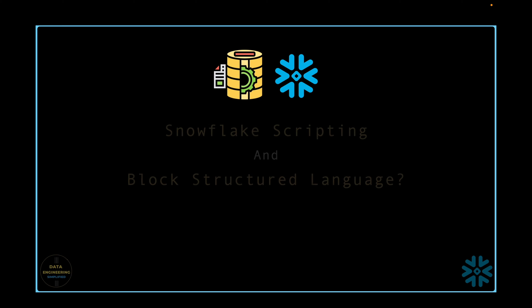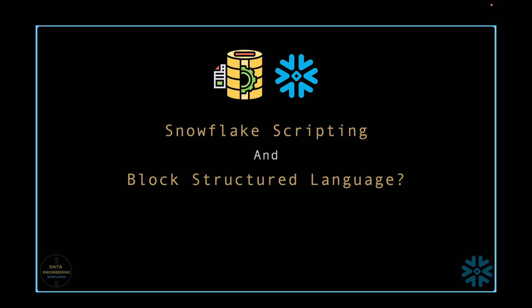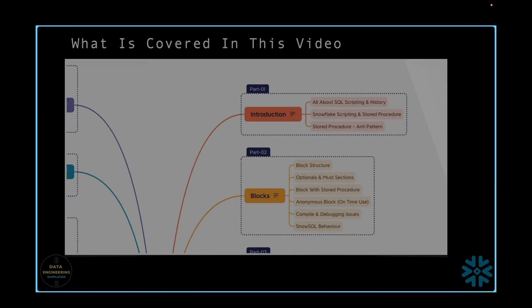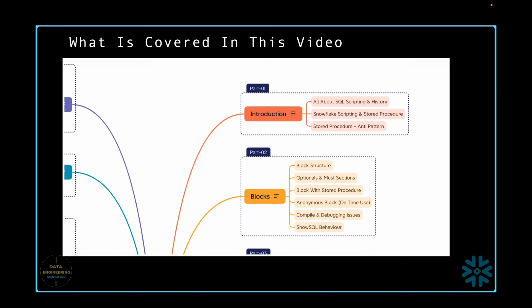In this chapter, we will explore the block structure of Snowflake scripting, which is used in both stored procedures and anonymous blocks. In our last two episodes, we had a detailed discussion about the importance of Snowflake SQL scripting, its history, common usage patterns, real-life examples, and best practices to avoid anti-patterns. In this chapter, we will deep dive into the theory of block structure and engage in practical exercises.